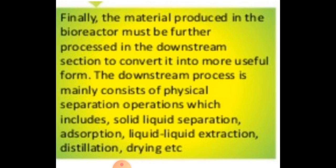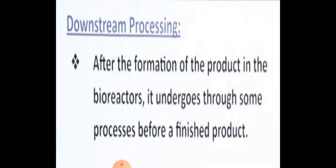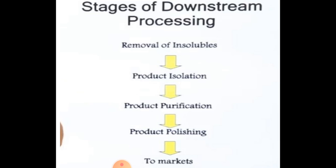In downstream processing, the product has been formed. Now the product is subjected to further processes so that it becomes finished - whatever impurities are there are removed, the product is properly purified, and finally it is ready for marketing as a finished product. After the formation of product in bioreactors, it undergoes through some processes before becoming a finished product.